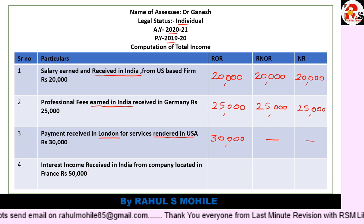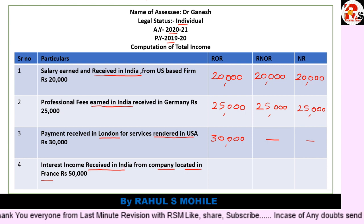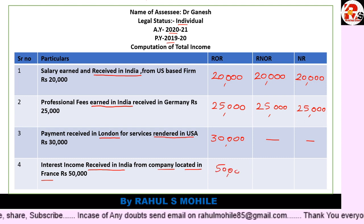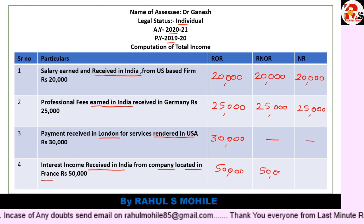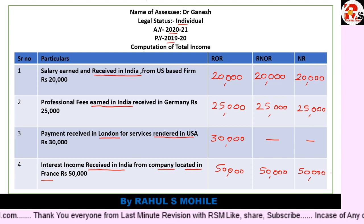Next point: interest income received in India from a company located in France. Received where? India. It doesn't matter where the company is located. Since the income is received in India, it relates to India and goes in all three columns. The amount is ₹50,000 — write 50,000 in ROR, RNOR, and NR.